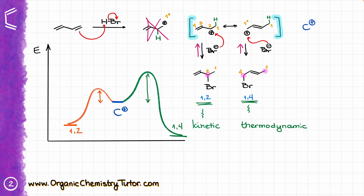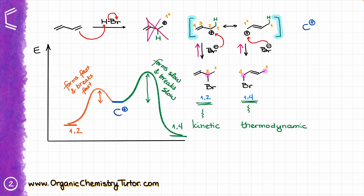Since the 1,2-product can form rather easily, it can also break just as easily. The 1,4-product — our thermodynamic product — takes more energy and more time to form, but it also takes significantly more energy to break. So the 1,2-product forms fast and breaks fast, while the 1,4-product forms slow and breaks slow. If we make the thermodynamic product, it will be less likely to break up than the kinetic product.